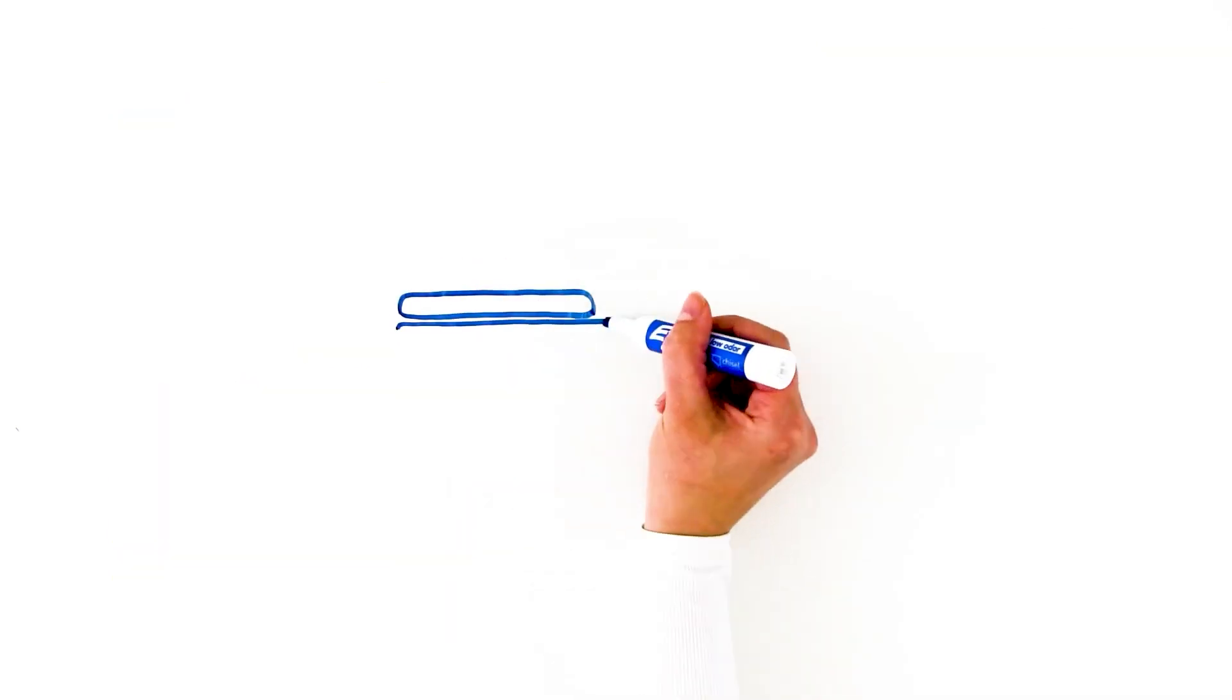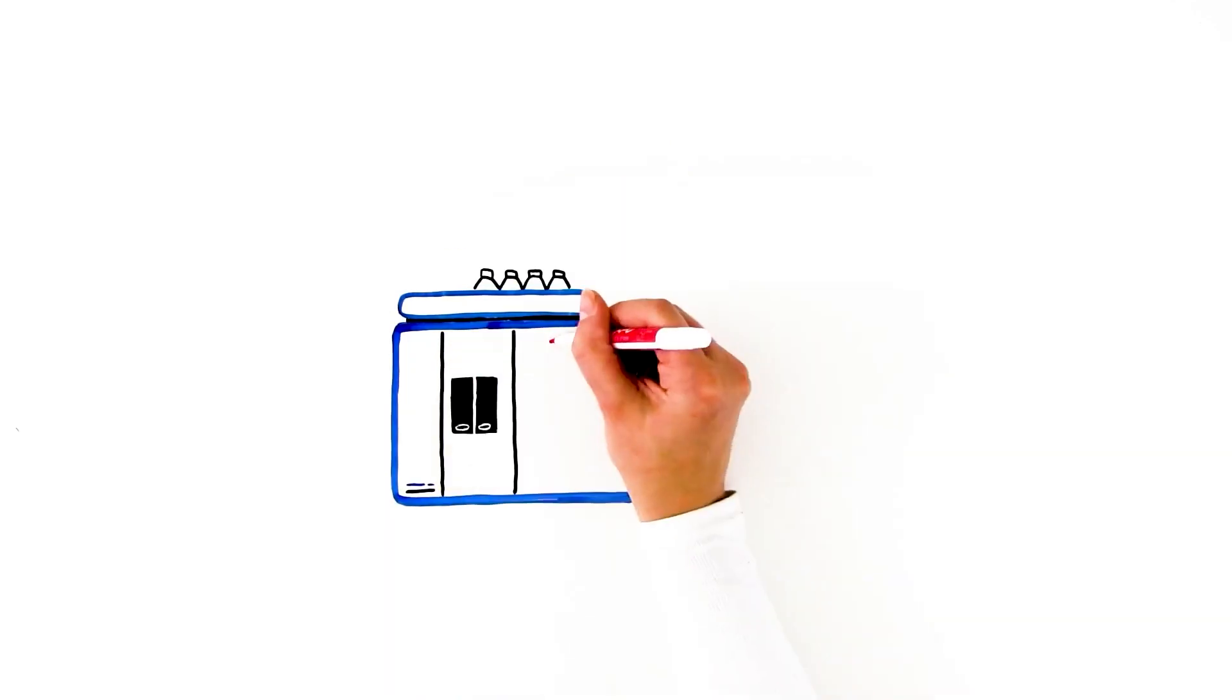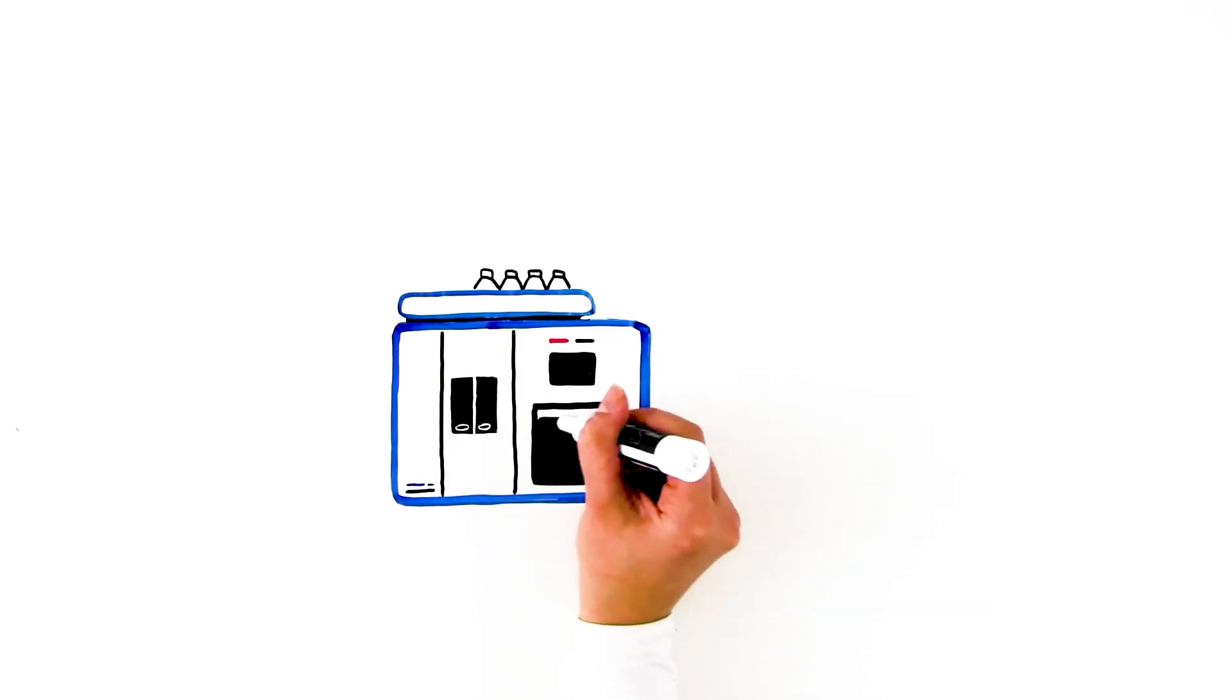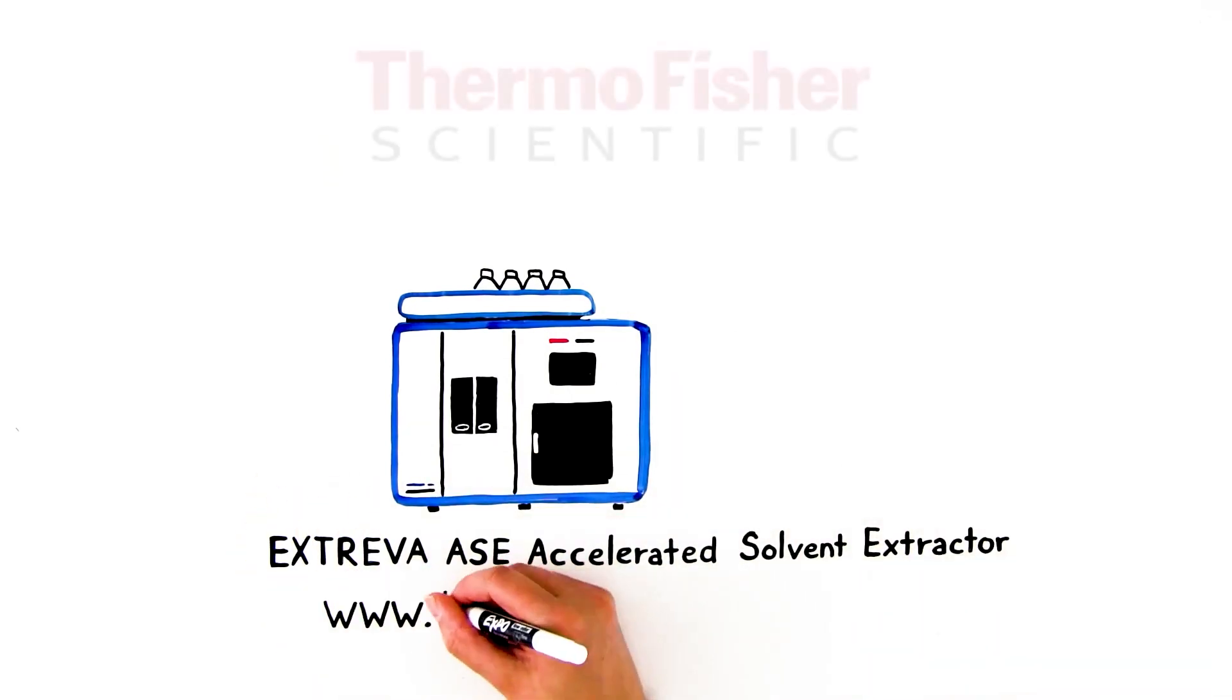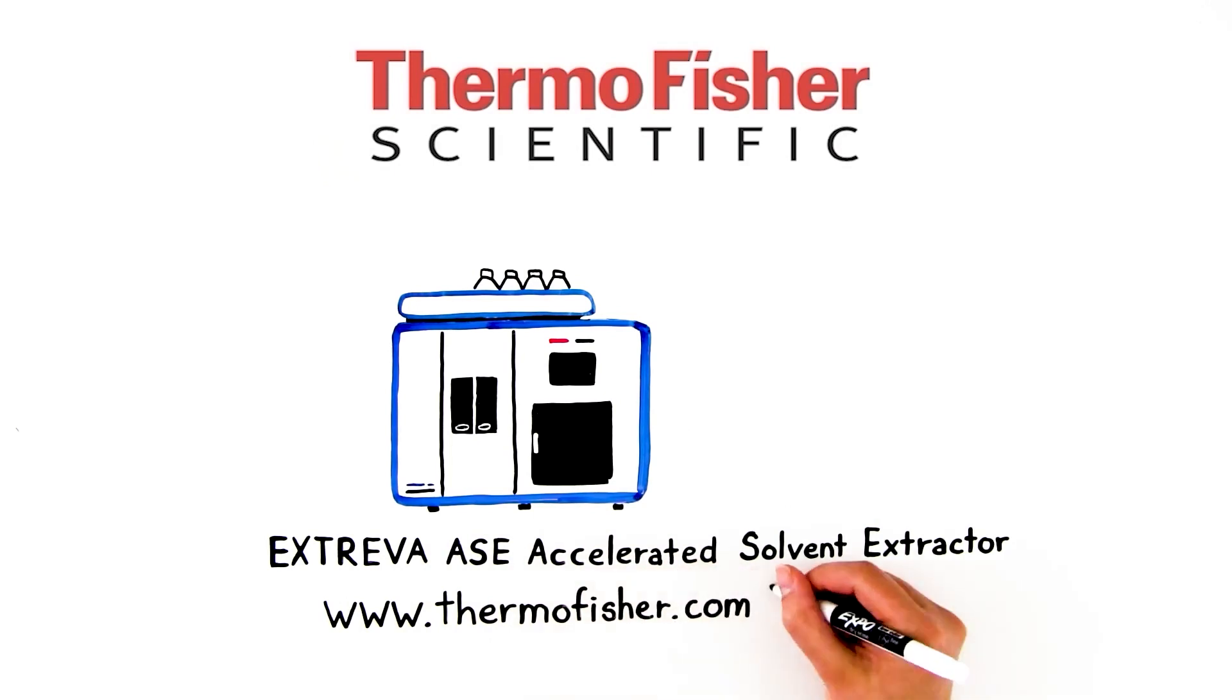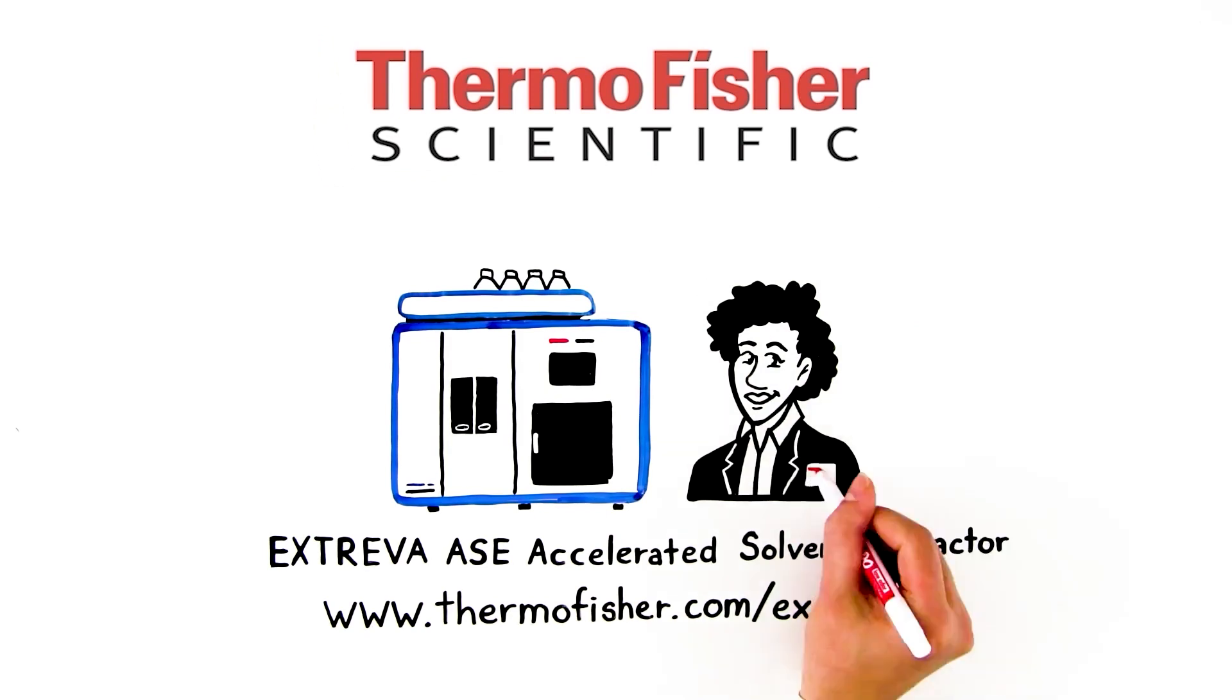The Extreva ASE system, the perfect partner for your GC, mass spec, or LC-MS. For more information about the Extreva ASE Accelerated Solvent Extractor, visit thermofisher.com/extreva, or contact your local ThermoFisher Scientific sales representative.